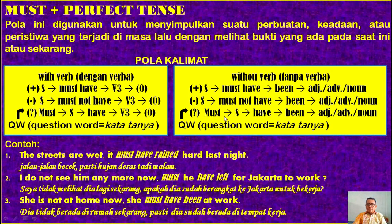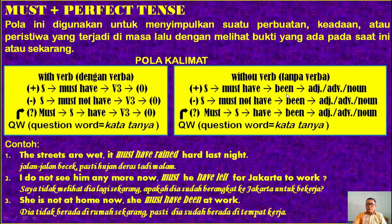Pola interrogative atau pertanyaan yang dijawab dengan ya atau tidak: 'must', subject, 'have been', diikuti dengan adjective, adverb, atau noun. Apabila ada kata tanya, maka question word diletakkan paling depan. Kita masih ingat bahwa jika predikat bukan kata kerja, kita menggunakan to be, dan bentuk ketiganya adalah 'been' atau yang kita kenal dengan past participle.